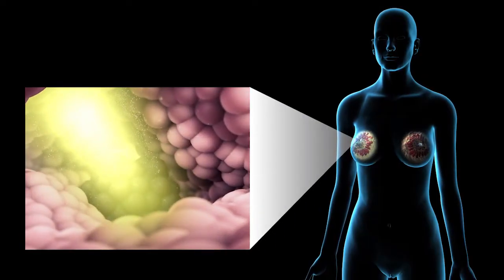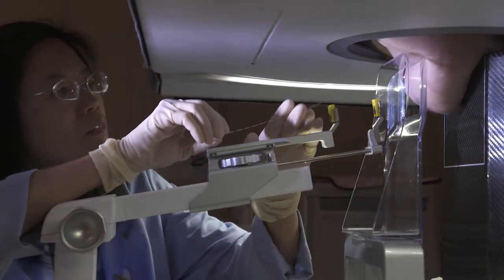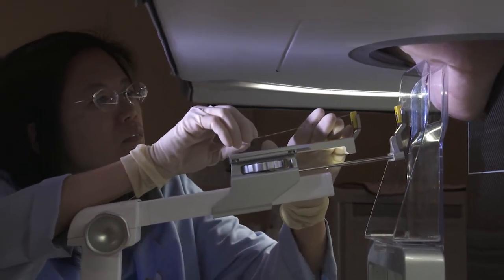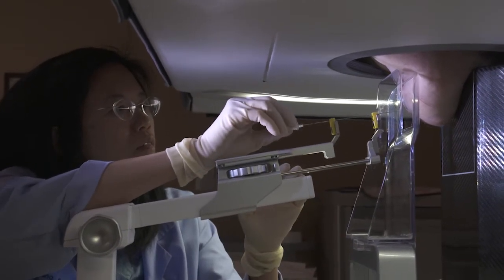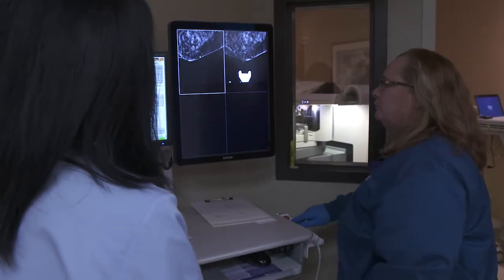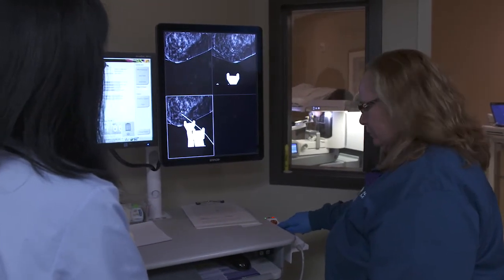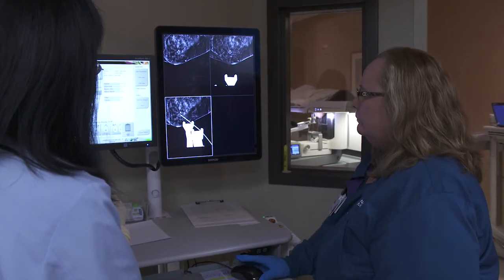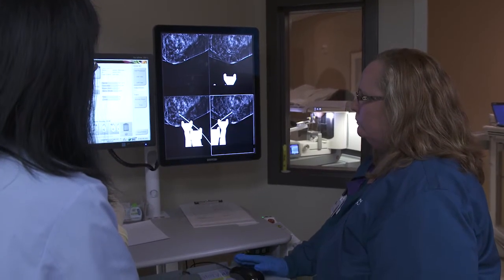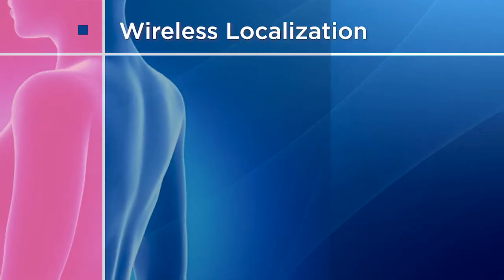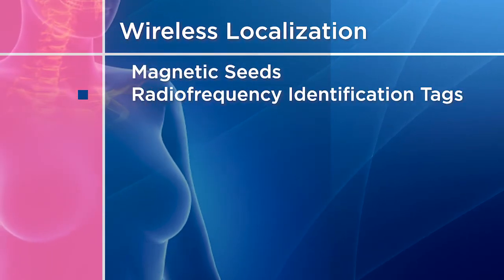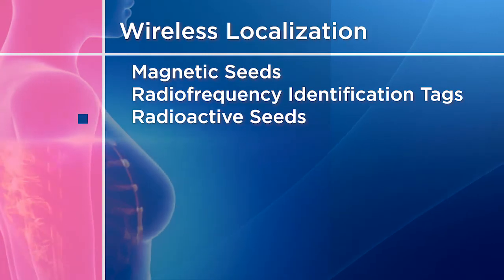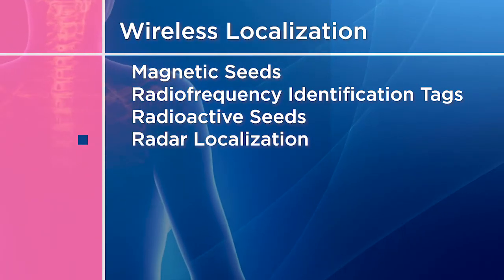Lumpectomy is usually coupled with radiation after surgery. Radiation is used to kill unseen cancer cells. If the surgeon cannot feel the tumor before the lumpectomy, you may have a wire or wireless localization. A radiologist will use a mammogram to locate the tumor, and a thin wire will be inserted into your breast just before surgery and passed down to the marker or clip to help guide your surgeon to the area that needs to be removed. Surgeons may also use wireless localization, including magnetic seeds, radio frequency identification tags, radioactive seeds, or radar localization.